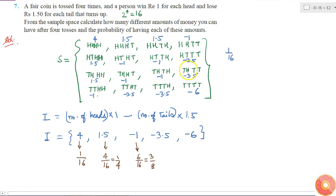For minus 3.5 there are 4 favorable outcomes, so for this probability will be 4 by 16, which is equal to 1 by 4. And for losing 6 rupees there is only one case, so this will be 1 into 1 by 16, which is 1 by 16. So these are the probabilities of different values of incomes.